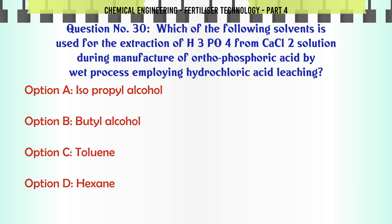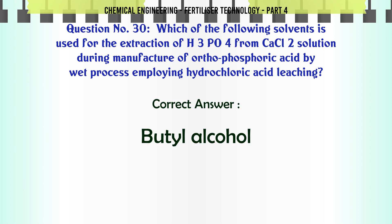Which of the following solvents is used for the extraction of H3PO4 from CaCl2 solution during manufacture of orthophosphoric acid by wet process employing hydrochloric acid leaching? a. isopropyl alcohol, b. butyl alcohol, c. toluene, d. hexane. The correct answer is: butyl alcohol.